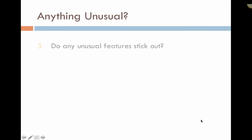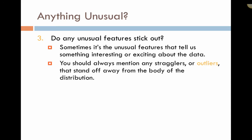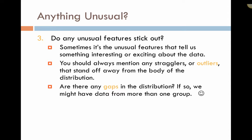Then we're looking for any unusual features. Sometimes it's the unusual features that tell us something interesting or exciting about the data, and a lot of times that can be what we're most interested in. An outlier would be something that is unusual. Outliers are stragglers that stand off away from the body of the distribution. Anytime you see an outlier, you want to mention that in the distribution. The other unusual features are any gaps in the distribution. Gaps tend to indicate that the data may have came from more than one group.